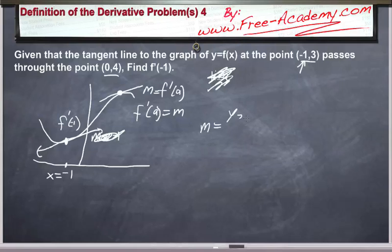m equals y2 minus y1 divided by x2 minus x1. We'll use (0, 4) as point 2, and we'll use (negative 1, 3) as point 1. So this will give us 4 minus 3 divided by 0 minus negative 1, which is a positive 1.